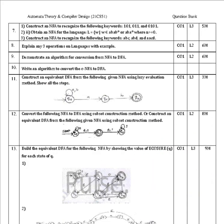Next is constructing an NFA from a DFA. There are two types: epsilon-NFA and NFA without epsilon using the lazy evaluation method, and the subset construction method. You have to construct the NFA to recognize keywords like 10101 and 10101, drawing the automata diagram.